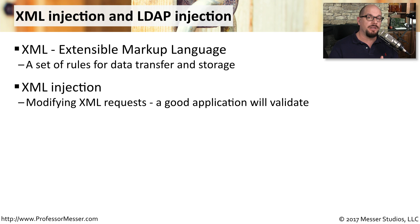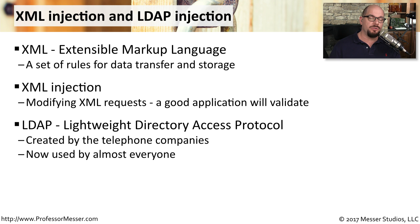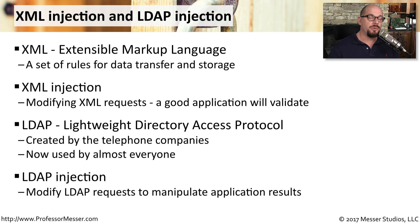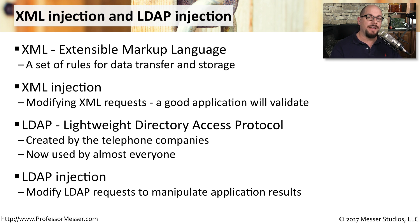A good application is obviously going to validate the XML. We're looking for the poorly written application where we can put whatever we'd like into that XML file and inject it into the application. Another language we can use to inject our own data is LDAP — the Lightweight Directory Access Protocol. This allows us to retrieve information from LDAP databases, very similar to what we saw with a SQL injection, so by using our own injection into the LDAP database, we're able to see more information than normally we would have access to. These are significant vulnerabilities — by taking advantage of shortcomings in an application, we now have access to a wealth of data that normally would not be available to us.